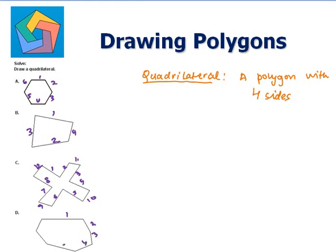1, 2, 3, 4, 5, 6, 7. No. So the only figure which has four sides is B. B is a quadrilateral.